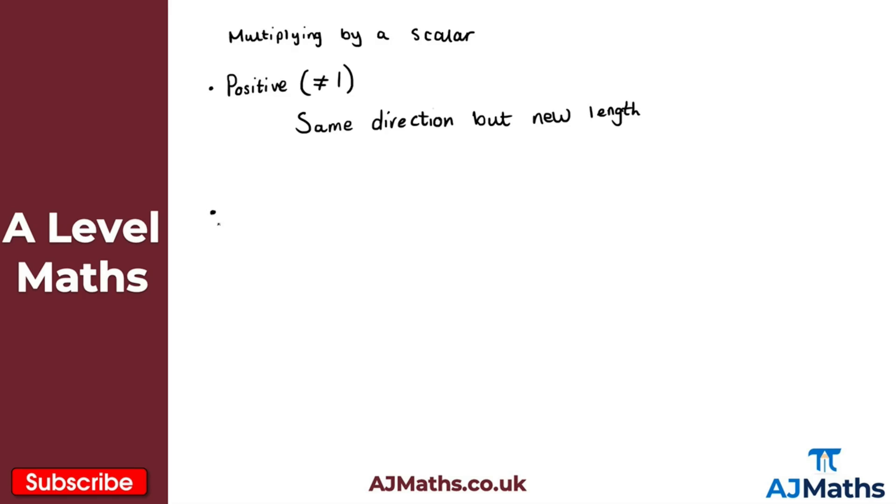So that's the case for a positive scalar. So we're thinking about a negative scalar here. So negative now. Again, with the exception in this case of minus 1. So negative with the exception of minus 1. Then in this case, what happens now is we have the opposite direction. We have opposite direction. Opposite direction and we also have a new length. And again, that might be bigger or smaller and new length there. So similar to the case of what we had there by multiplying through by a positive scalar.